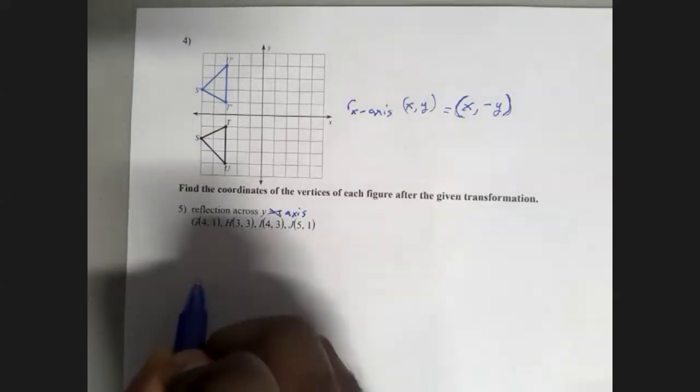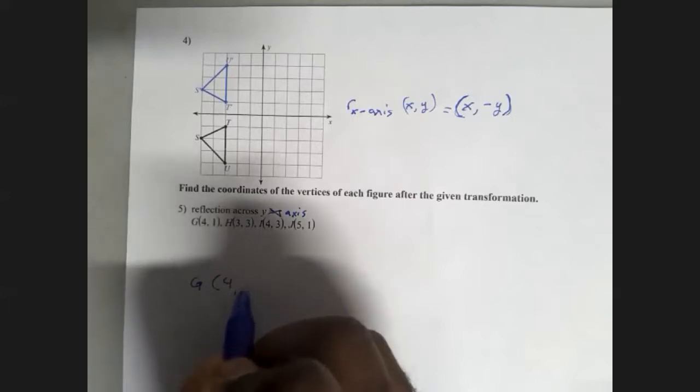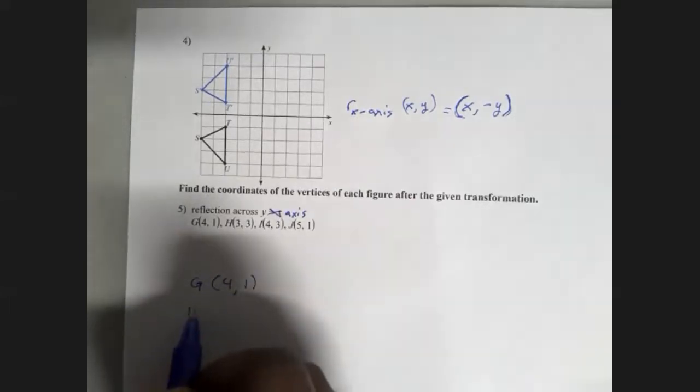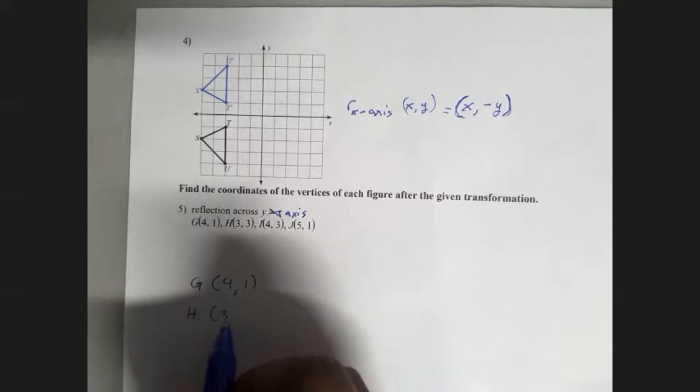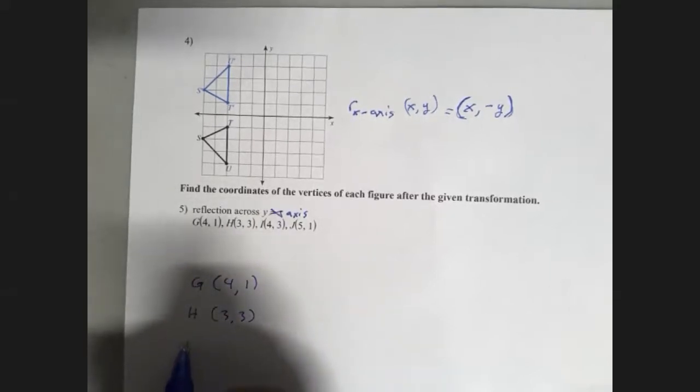Okay, so let's just take all our points. G is located at (4,1), H is located at (3,3), I is located at (4,3), and J is located at (5,1).